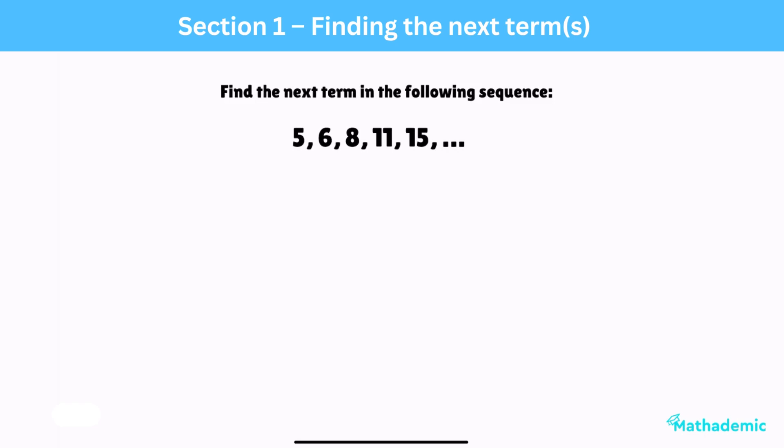Look at the difference between each pair of consecutive terms. Remember, each value of the sequence is known as a term. We can see that the pattern goes plus 1, plus 2, plus 3, plus 4. So if we continue this pattern and add 5, we get 20 as our next term.